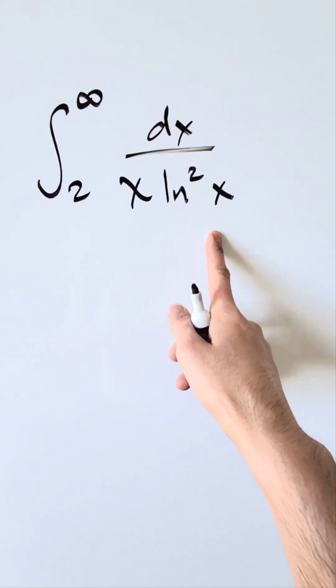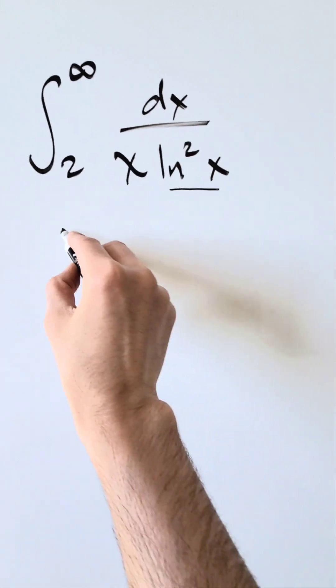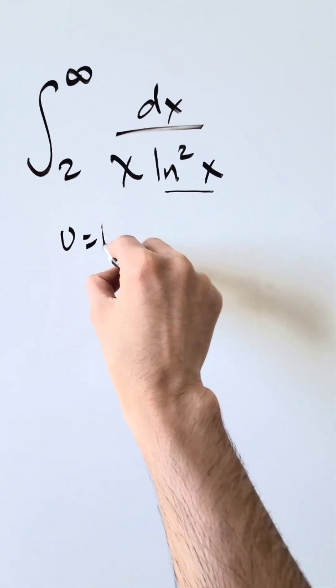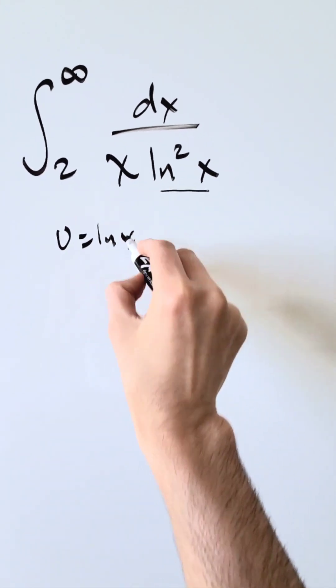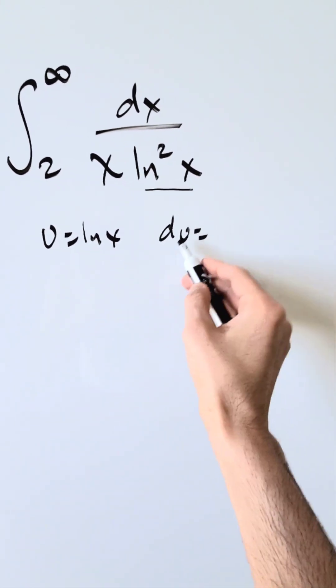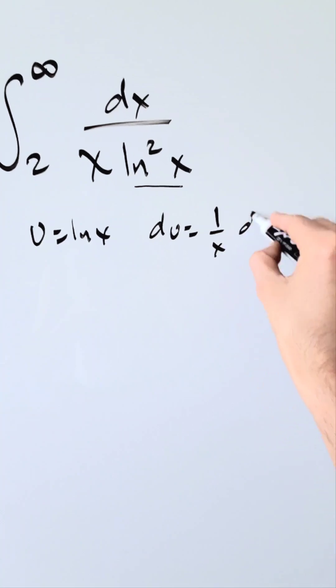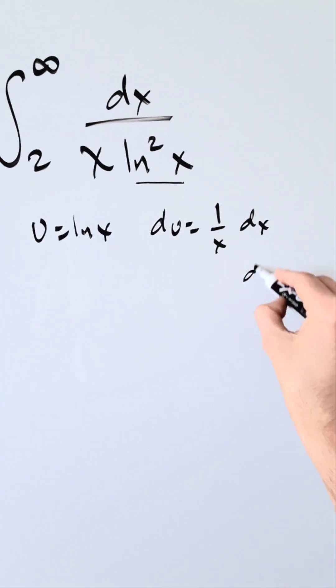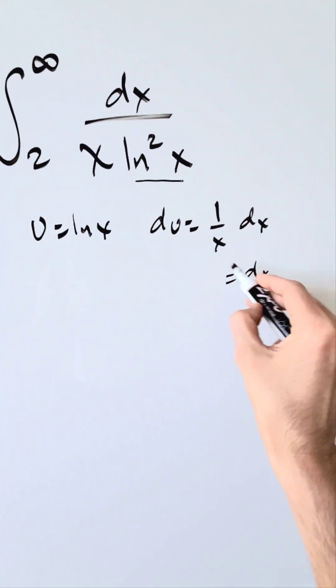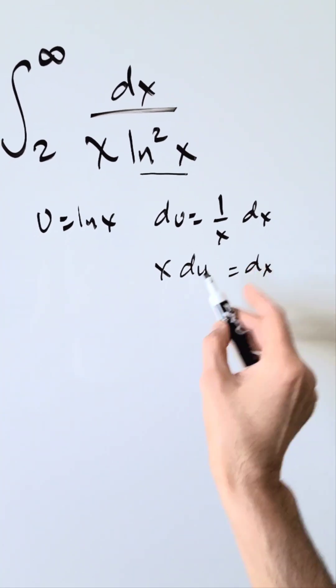U-substitution. Let u be equal to natural log x. Then du is equal to 1 over x dx. Solving for dx, that gives dx equal to x du.